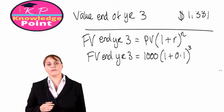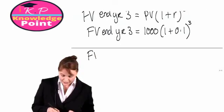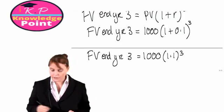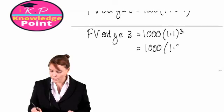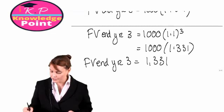Working that through, the future value at the end of year three will be equal to a thousand multiplied by 1.1 to the power of three — you are going to need your scientific calculators for this. So a thousand multiplied by 1.331 gives a future value at the end of year three of one thousand three hundred and thirty-one dollars. Make sure you know your formulae for compound and simple interest calculations so you can do these quickly in the exam.